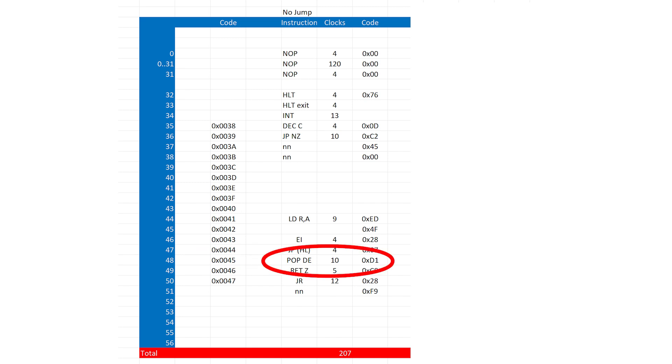We pop DE and remove and discard the return address from the stack. We need to skip 5 clock cycles here, and the return Z instruction is just to fill space.